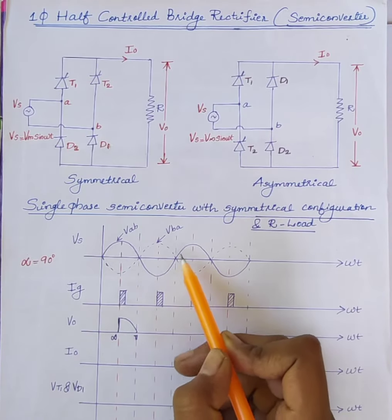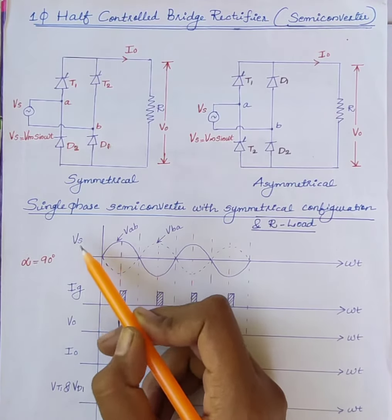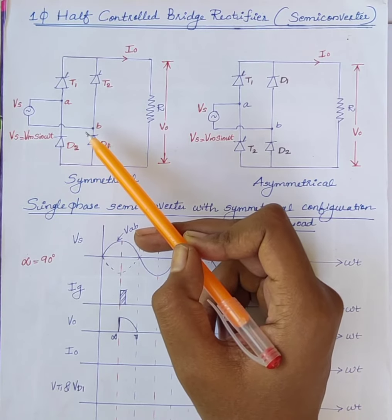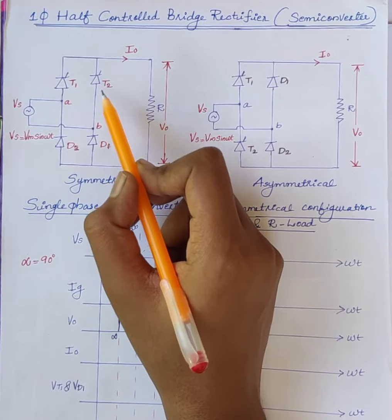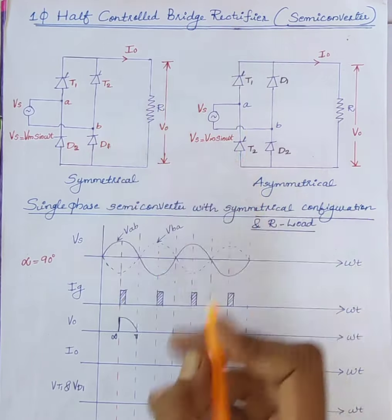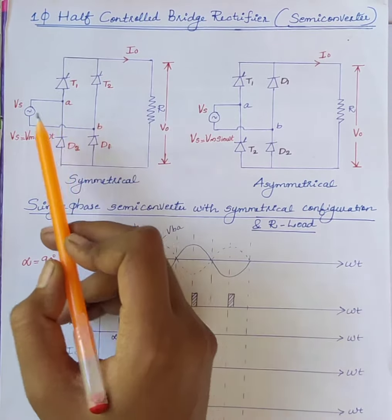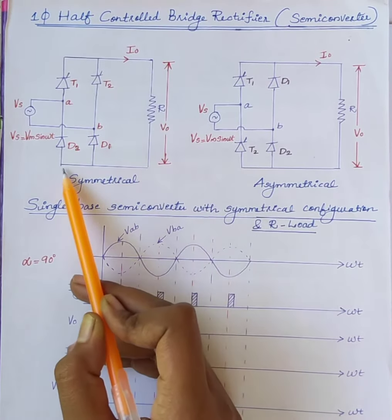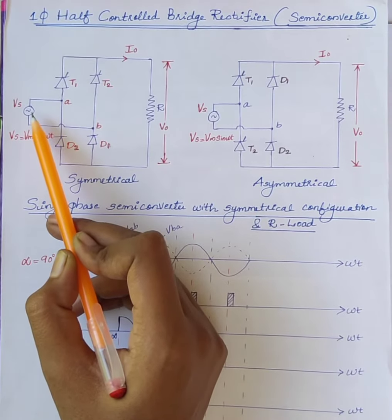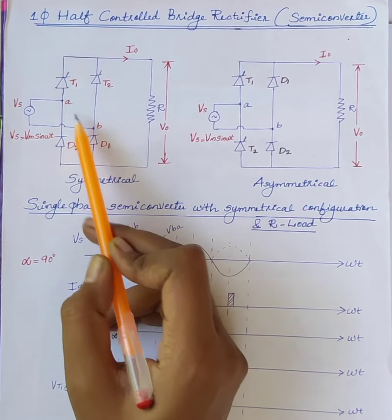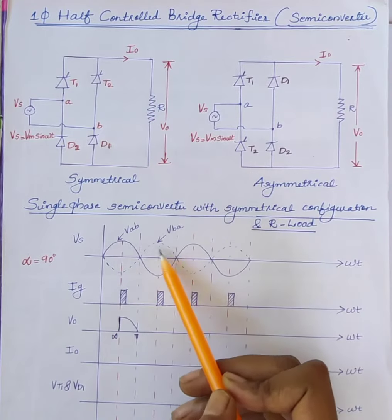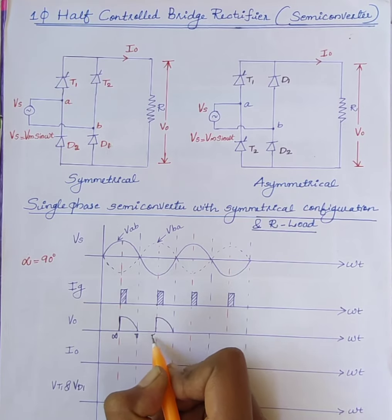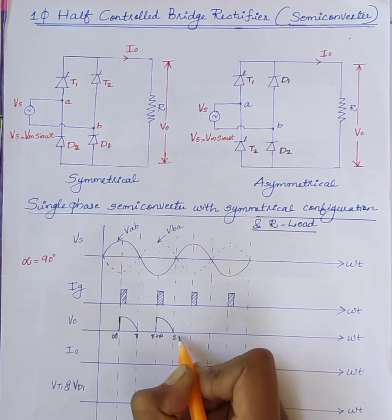During the negative half cycle of the AC supply, thyristor T2 and diode D2 are forward biased. When thyristor T2 is triggered at an angle pi plus alpha, current flows through the path: Vs → T2 → load → D2 → back to source. The voltage VBA appears across the load, spanning from pi plus alpha to 2 pi.